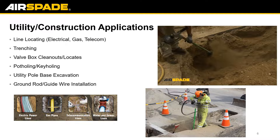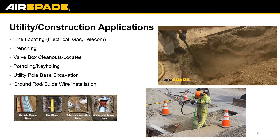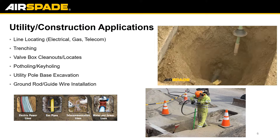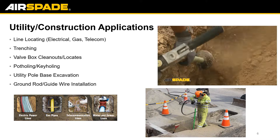Some of the applications the Air Spade is used for most commonly include line locating — to identify where electric, gas, and telecommunication lines are before mass excavation is started. Trenching is also very big for any maintenance applications or installs, and potholing falls into the line locating category. There are also a few other unique applications such as utility pole-base excavation and ground rod or ground wire installation. Here's a quick video to better show what the Air Spade is capable of and how it works. As you can see, it's not going to cause any damages to any of the infrastructure and does an effective job of excavating the soil around it.